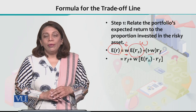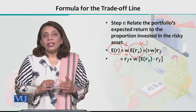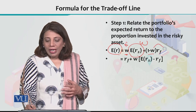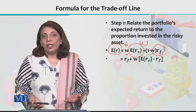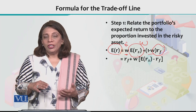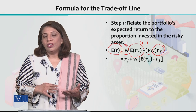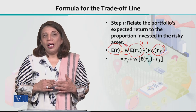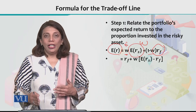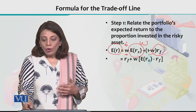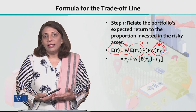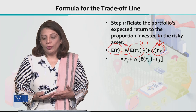Then 1 minus W is the proportion invested in the risk-free asset. For the risk-free asset, we don't take an average — its return is fixed, known, and predictable, with no fluctuations. That value is RF. Because it is known with no fluctuations, the standard deviation of the risk-free asset's return is zero.